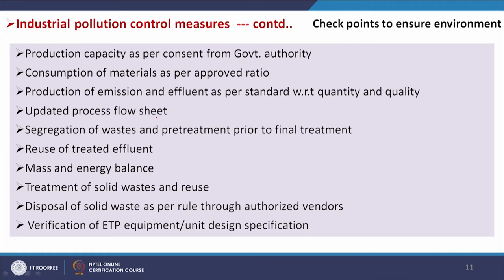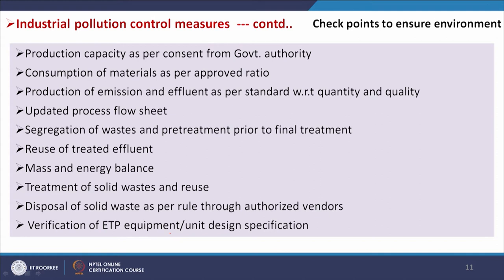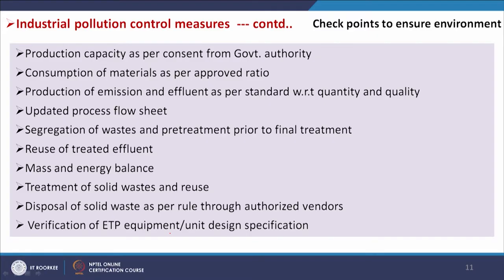Checkpoints to ensure environmental compliance include: production capacity as per consent from government authority, consumption of materials as per approved ratio, and production of emission and effluent within standard quality limits. Government authority specifies production capacity and approved material ratios in the consent. If these are maintained, the process is followed properly and there is less chance of pollution.